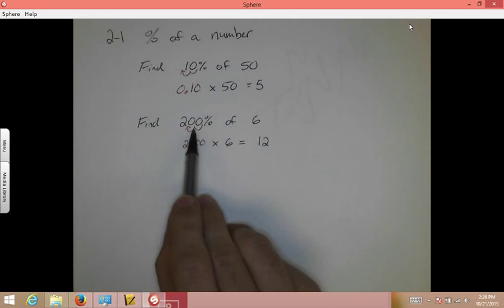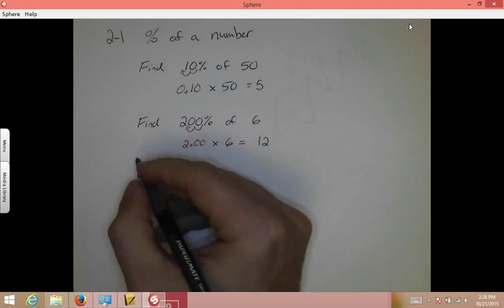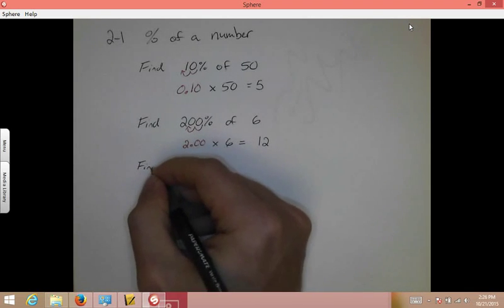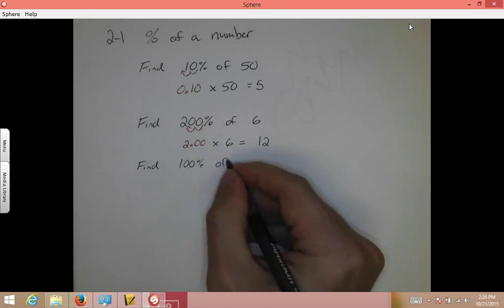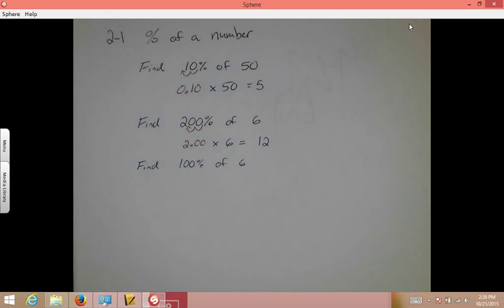A hundred percent of something, since 100% is one whole, a hundred percent of something is going to be the number itself. For example, find 100% of 6, again,